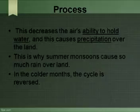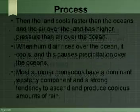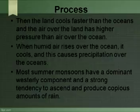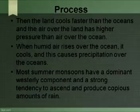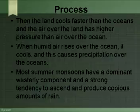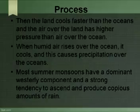In the colder months, the cycle is reversed. The land cools faster than the oceans, and the air over the land has higher pressure than the air over the ocean. This causes the air over the land to flow to the ocean. When humid air rises over the ocean, it cools and this causes precipitation over the oceans. The cold air then flows towards the land to complete the cycle.